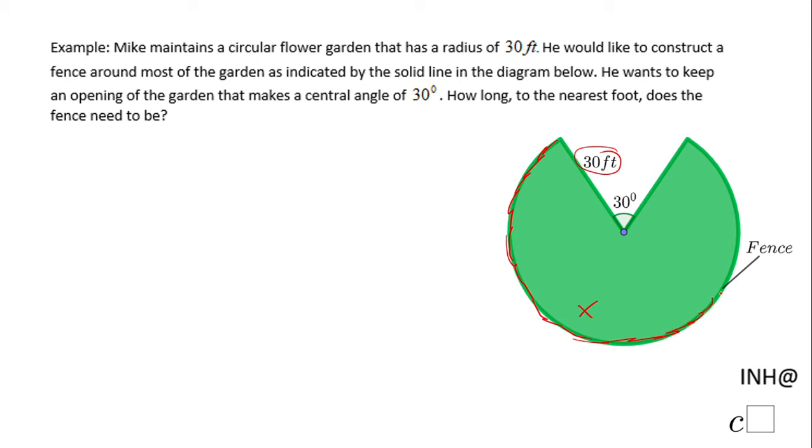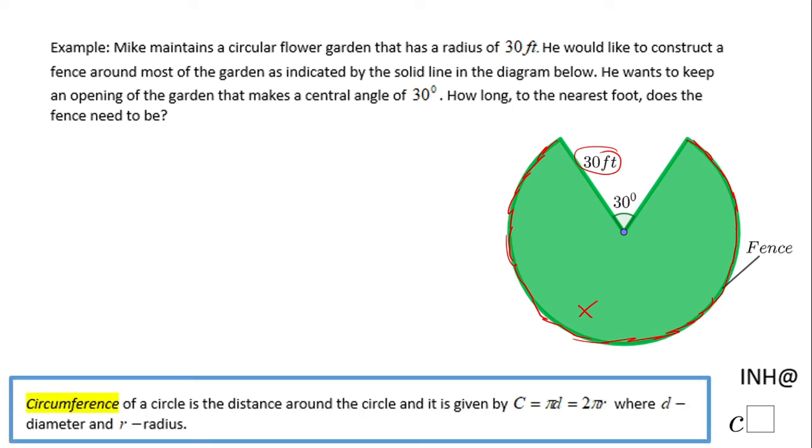...the marker goes. So it's not the whole circumference, but first of all I'm gonna need to find the circumference. I'm gonna use this formula: C = 2πr where the radius is 30 feet.